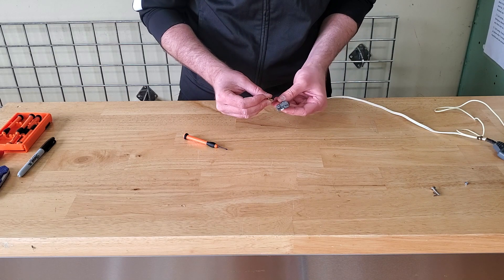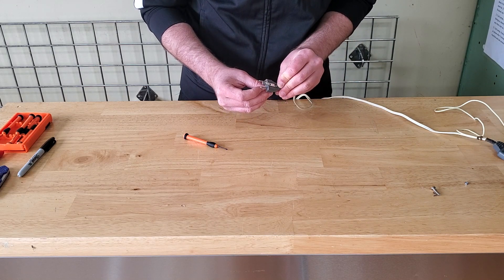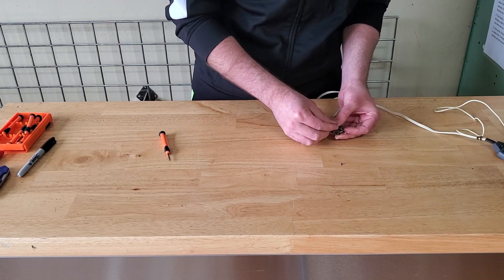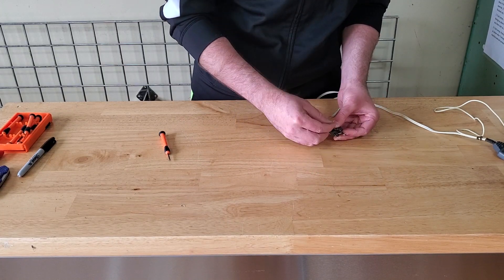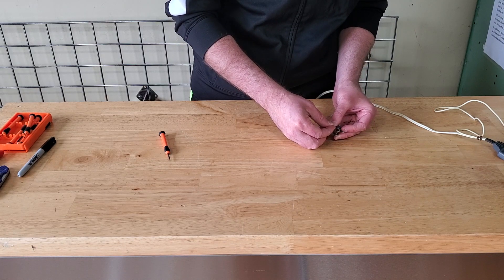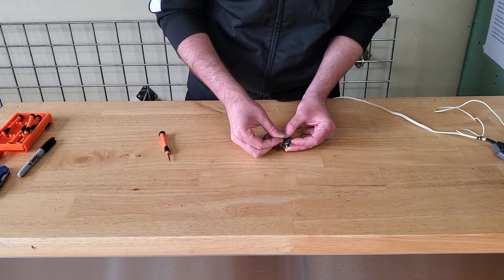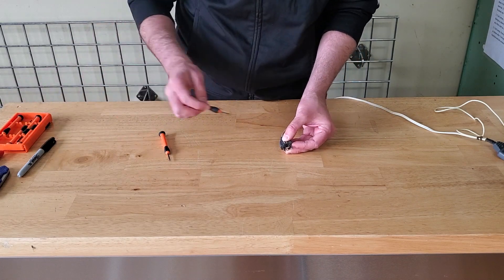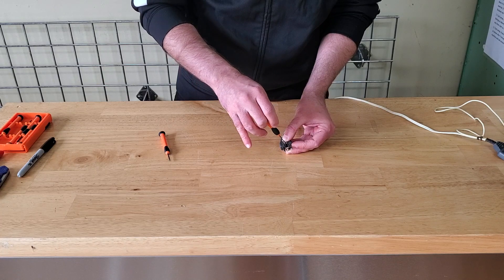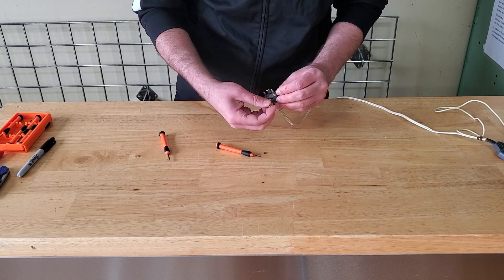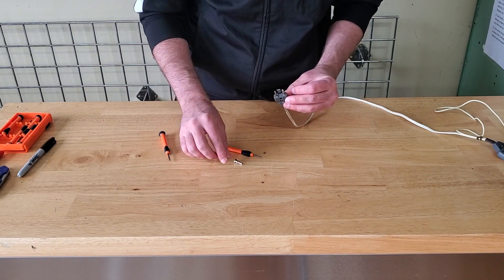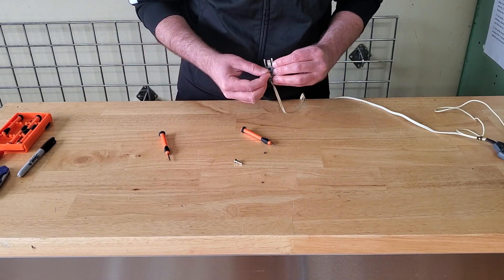I'm going to grab this other screw. So just reassembling, it's like we took it apart. So what I'm doing here is I put that screw and the button in together. So the spring and the button going in together.